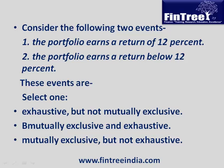Consider the following two events: a portfolio earns a return of 12%, and a portfolio earns a return below 12%. These events are — select one of the following options: exhaustive but not mutually exclusive; mutually exclusive and exhaustive; or mutually exclusive but not exhaustive.